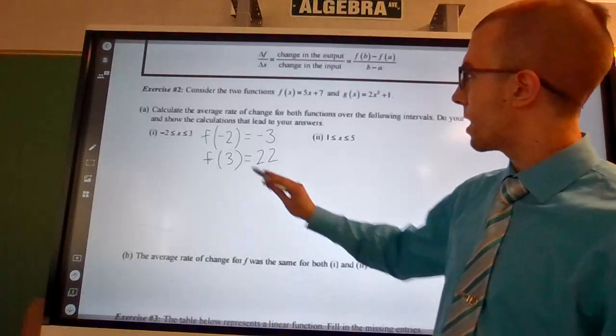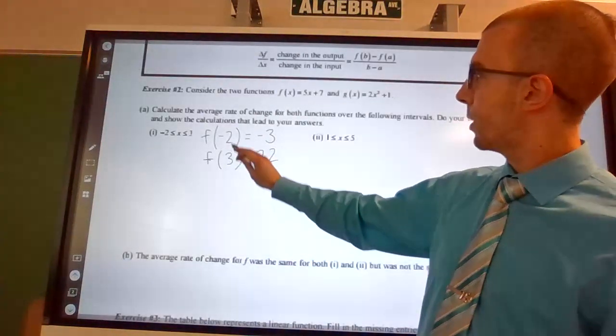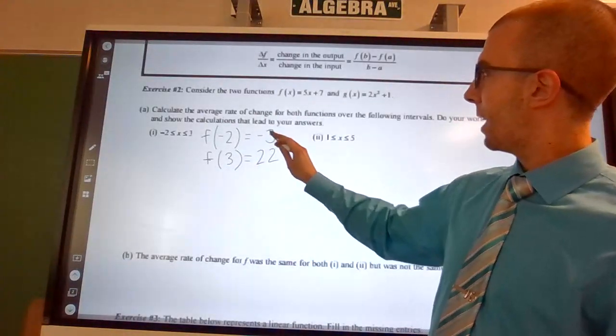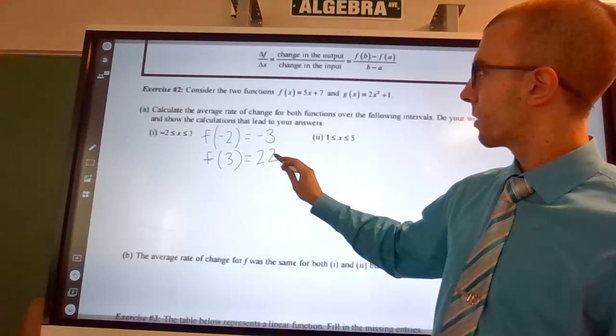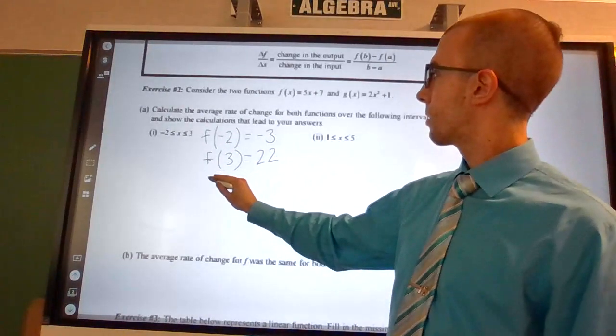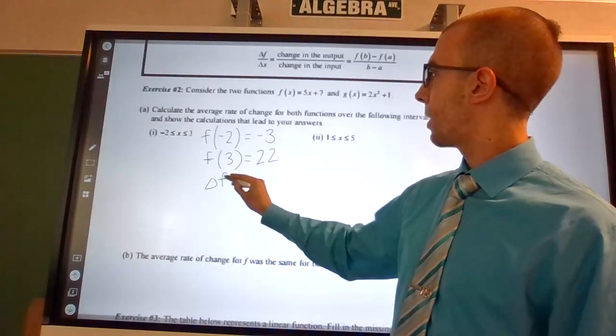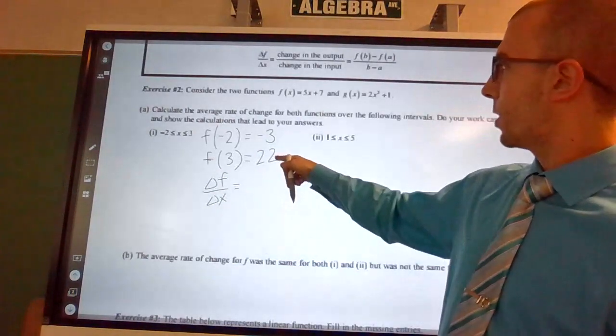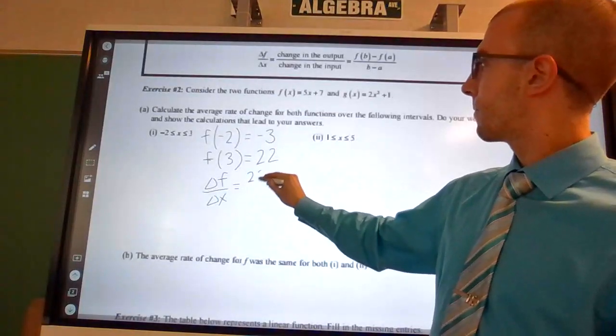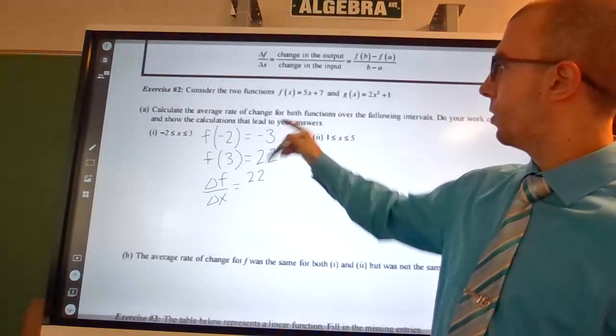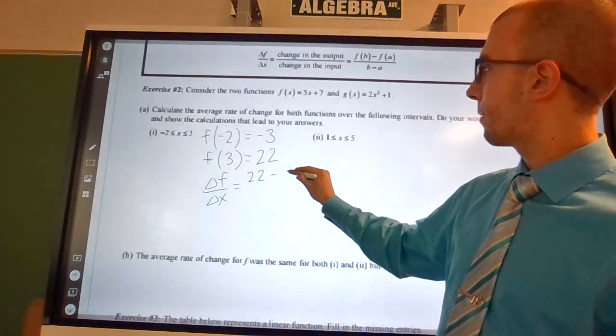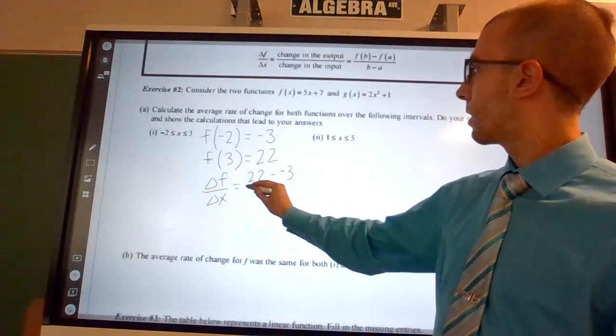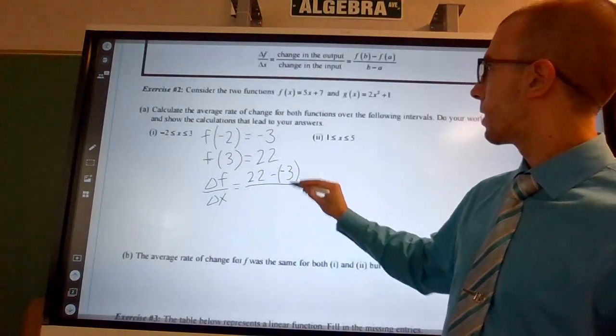Okay, so now I have my f of x inputs, negative 2 and 3, and I have those outputs. So I want to do the change in f over the change in x. So my function ended at 22, but started at negative 3.